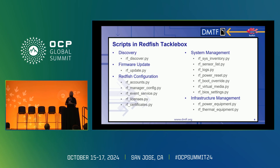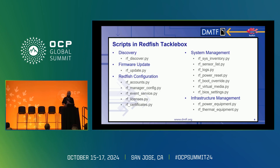RF boot override performs one-time boot operations — for example, during initial provisioning you can trigger a one-time PXE boot and reset the system so it executes that PXE boot. The virtual media script points your service to a hosted ISO image and presents it to the host system. RF BIOS settings is like sitting at the F2 menu on a console, letting you manage BIOS settings at that level of detail.